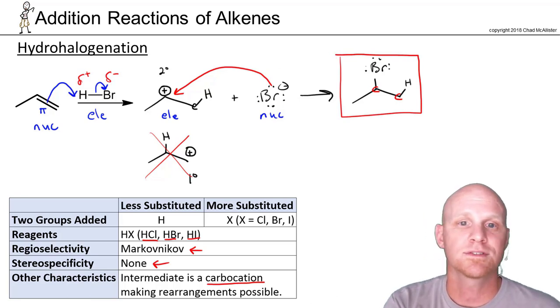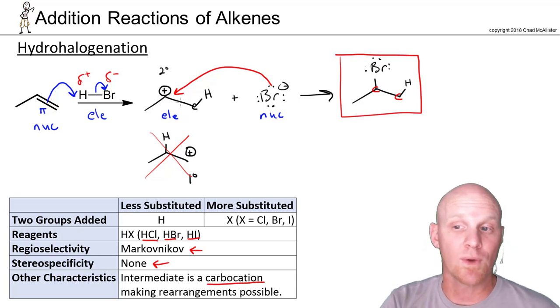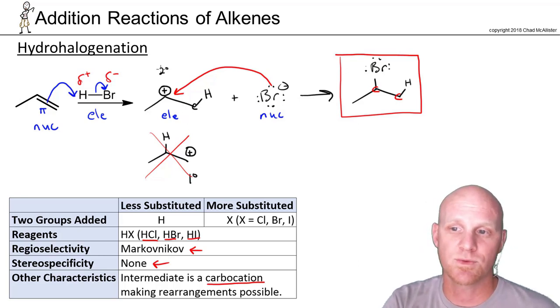One thing to note. I gave an example here where we wouldn't have to worry about a carbocation rearrangement, but anytime you form a carbocation, you should always consider rearrangements. We said this one was secondary, and the two adjacent carbons here are both primary, so no rearrangement was going to take place.